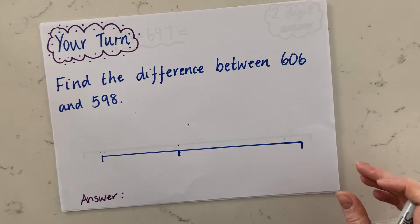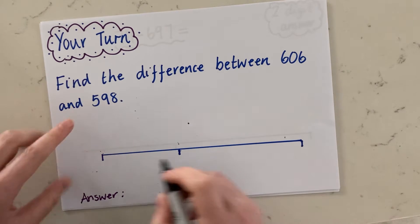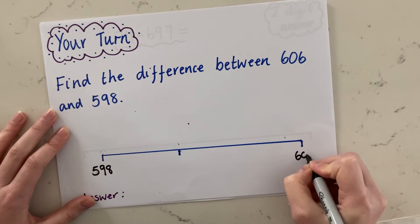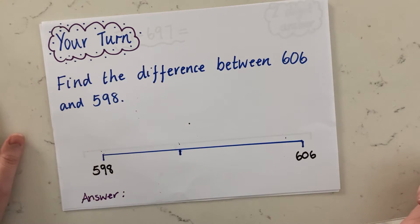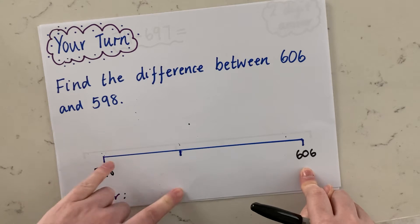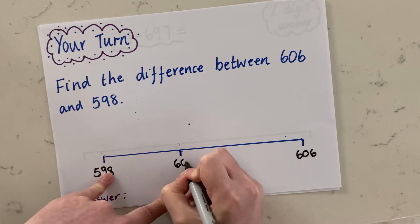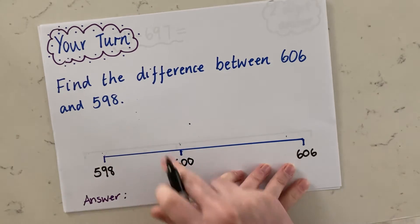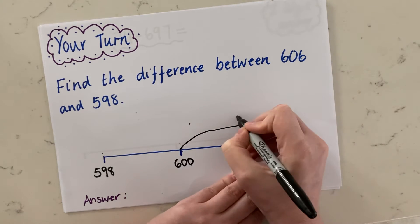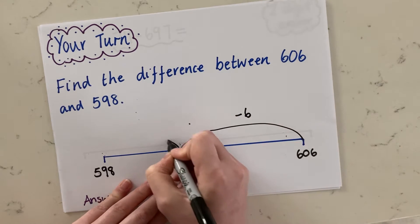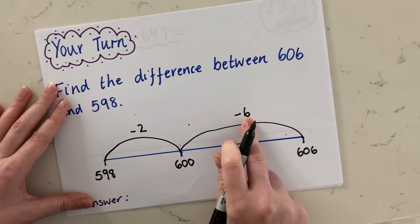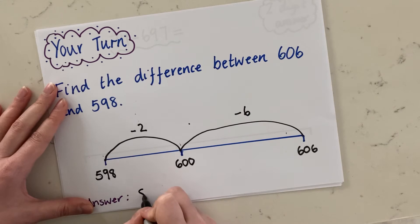Let's talk it through together then. We want to put our 598, because that's our smallest number, down here. 606 is our biggest number, so it goes here. What is the nearest multiple of 100 to 598 and 606? That's right, it's 600. So 606 counting back down to 600 — I need to take away 6. Then 600 back to 598, I need to subtract 2. Altogether I've subtracted 8. So the answer again for this one is 8.